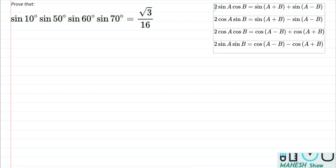The first thing I'm going to do here is to replace sin 60° with its value, that is √3/2. So I'll be writing this as √3/2, and then if I write the remaining, this is sin 10° multiplied by sin 50° multiplied by sin 70°.